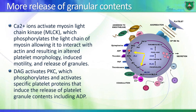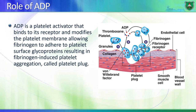The other side of the equation is diacylglycerol, the second product of hydrolysis of PIP2. Diacylglycerol binds to protein kinase C, which phosphorylates several proteins including protein 47, leading to further release of granular contents including ADP. ADP is a platelet activator - it binds to its receptor and modifies the platelet membrane, allowing fibrinogen to bind to the glycoproteins on platelets, resulting in further platelet aggregation, forming what is known as a platelet plug.